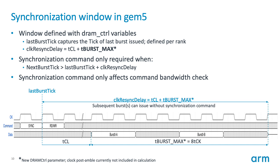A synchronization command is required when data_clock_sync is true and when a burst is issued outside a synchronization window. That window starts when the memory captures a new read or write burst, tracked in GEM5 with a new variable last_burst_tick defined per rank. The window duration is a function of CAS latency and tburst_max. If the next burst falls within the window no sync command is sent and the window shifts to start with the new command. This window also indicates when the data clock is active, which is useful for IO power calculations.